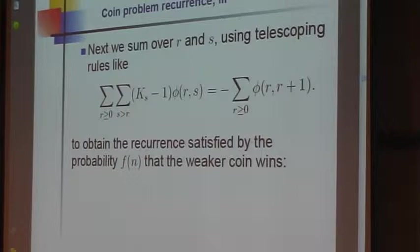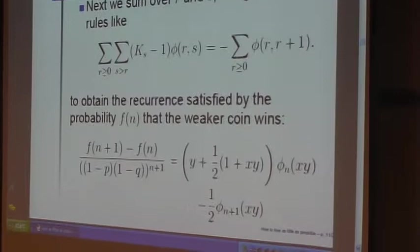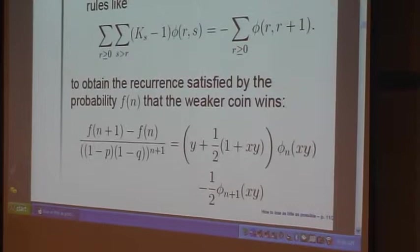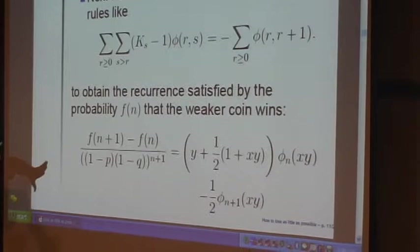And the bottom line is that the recurrence that f(n) satisfies—f(n) is now the sum, the actual probability that we saw a graph of in this slide—f(n) satisfies this recurrence right here. And I'll say what phi(n) is on the next slide; it's something explicit.